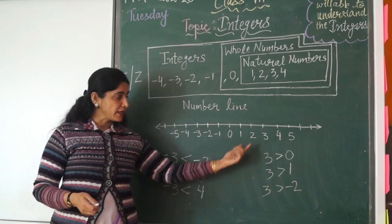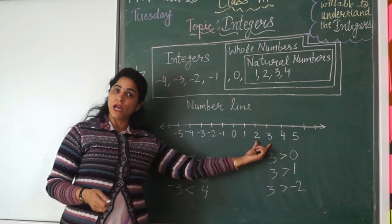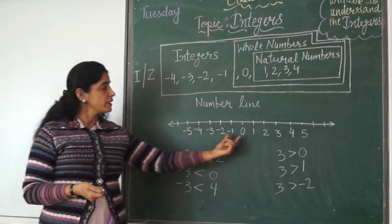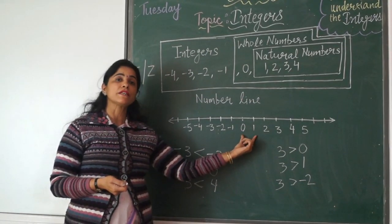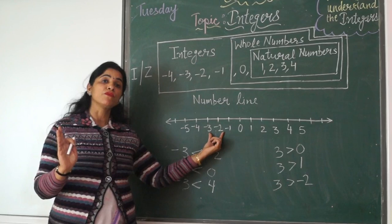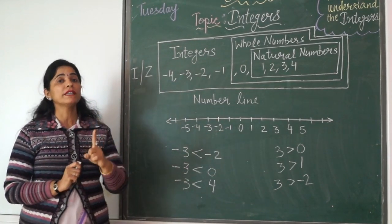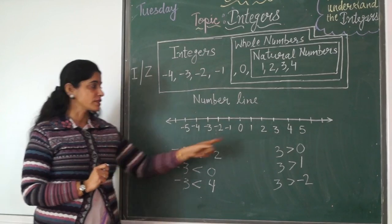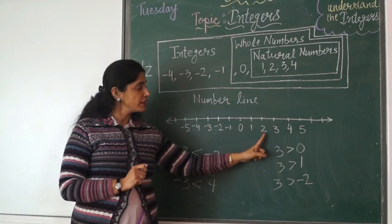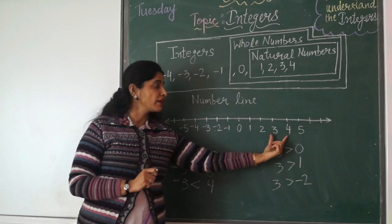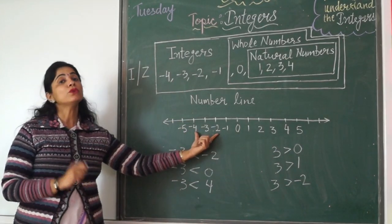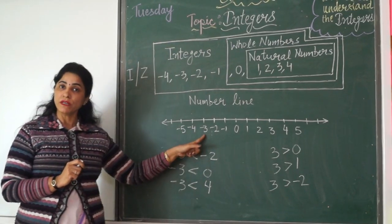There is no integer lying between two consecutive integers. For example, 2 and 3 are consecutive — they lie one after the other — and there is no integer between them. Similarly, there is no integer between 0 and 1, and no integer between minus 2 and minus 3, which are also consecutive integers. However, there lies at least one integer between any two non-consecutive integers. For example, 1 and 3 are non-consecutive and 2 lies between them. Similarly, 2 and 5 are non-consecutive and 3 and 4 lie between them. Minus 2 and minus 4 are non-consecutive integers and minus 3 lies between them.